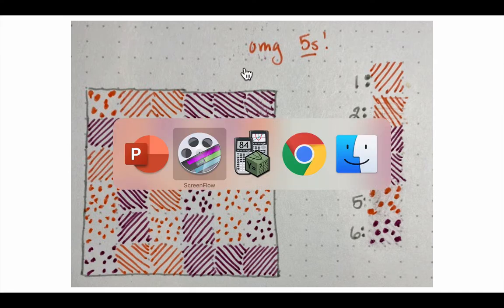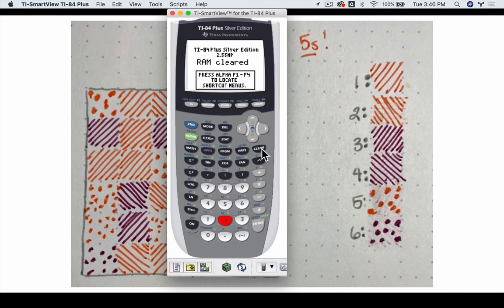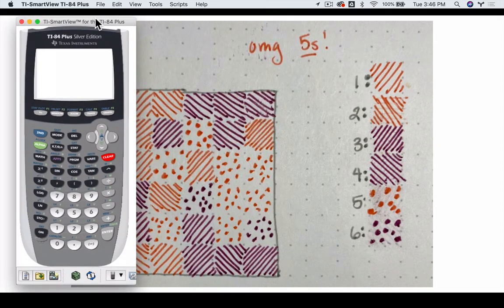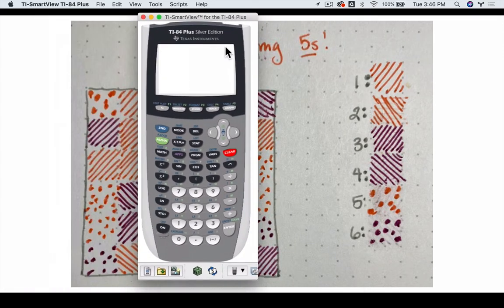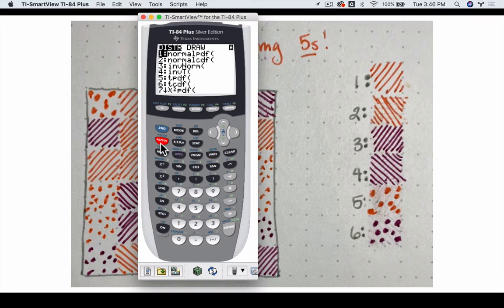So the graphing calculator is actually pretty powerful, pretty well set to answer this question. First of all, we're looking specifically at the probability of 11 fives popping up. That's what happened here. So I'm going to hit second, variables, and then go to alpha A. That's my binomial PDF.